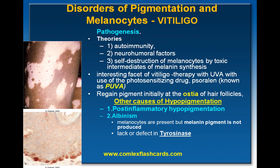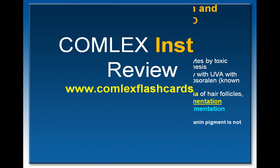Some other causes of hypopigmentation include post-inflammatory hypopigmentation as well as albinism, in which the melanocytes are present but melanin pigment is not produced. There is a lack or defect in tyrosinase.